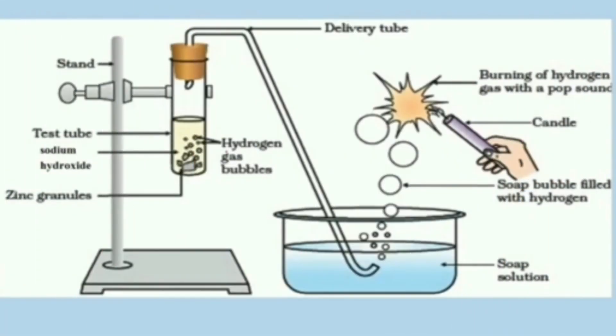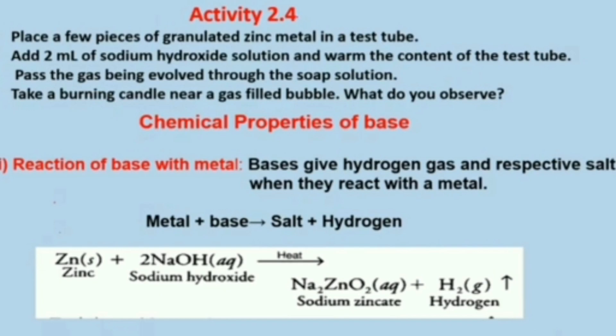Activity 2.4: in the previous activity we reacted zinc metal with an acid; now we are reacting zinc metal with a base. We follow the same procedure as in Activity 2.3. Place a few pieces of zinc granules in a test tube and add 2 ml of sodium hydroxide solution, then pass the gas through the soap solution. We will observe some bubbles; place a burning candle or matchstick near the bubbles and observe a pop sound. The reaction: Zinc + NaOH (sodium hydroxide), in the presence of heat, gives sodium zincate + hydrogen.